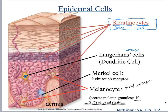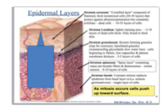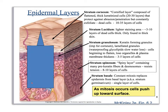The different strata are named based on their shape, location, and what they do. 'Stratum' just means layer. The stratum basale — 'basale' sounds like basement — is your deepest layer. Cells here are columnar to cuboidal in shape and are constantly dividing through mitosis to create new cells.